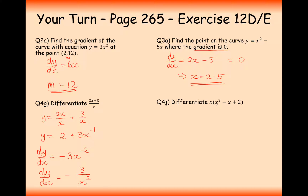For the last question, differentiate this function. The first thing to do is expand the brackets: x cubed minus x squared plus 12x. Now differentiate: the differential of x cubed is 3x squared, the differential of minus x squared is minus 2x, and the differential of plus 12x is plus 12. Go to exercises 12D and 12E and have lots of practice, as knowing how to differentiate is really important for A-level maths, especially if you're carrying on to the full A-level.